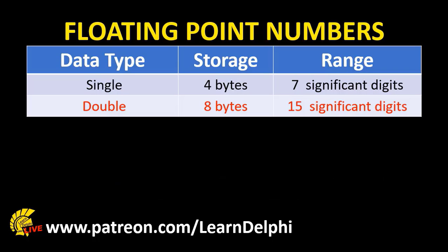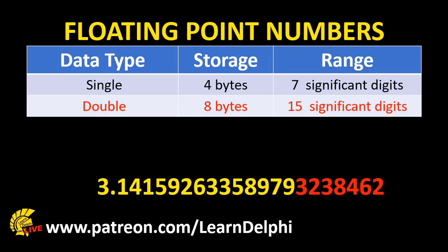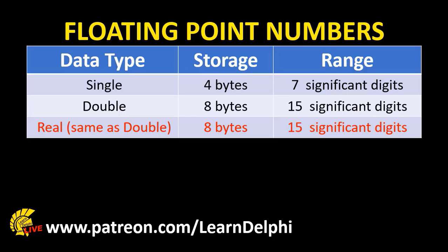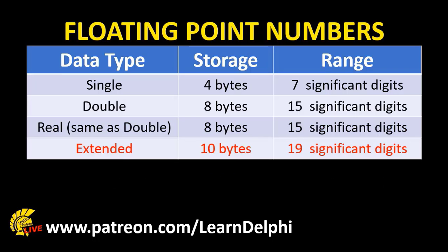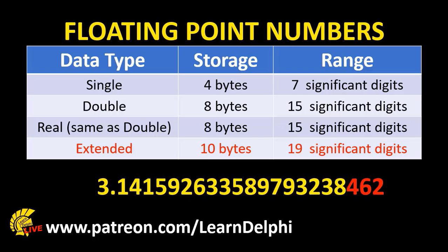If you require more precise calculations, you can declare a double. It is called a double because it provides double precision. A double uses 8 bytes and it allows for 15 significant digits in storage. So if pi is a double, the first 15 digits will be stored, as shown with yellow numbers on the screen. A real is the same as a double — it also takes 8 bytes and allows for 15 significant digits, storing the same 15 digits as a double. The extended data type is 10 bytes with 19 significant digits, so with pi stored as an extended, the first 19 digits will be stored.